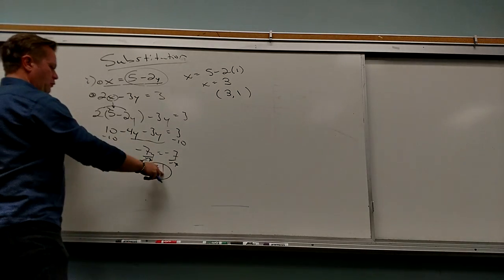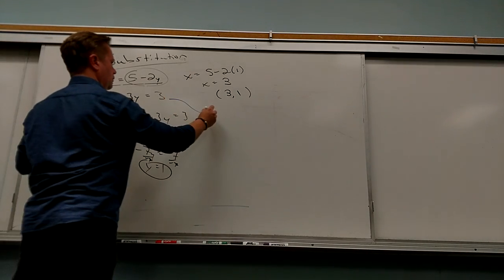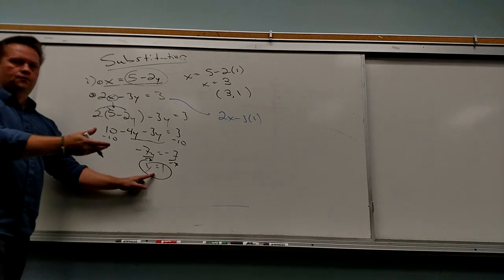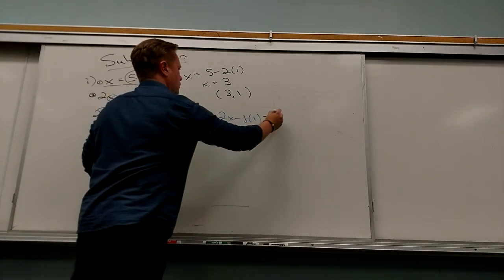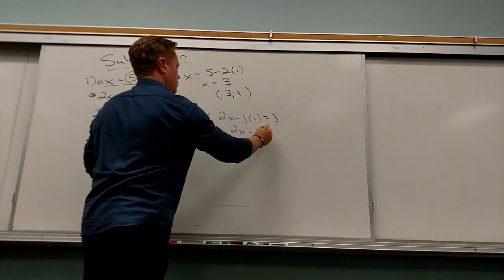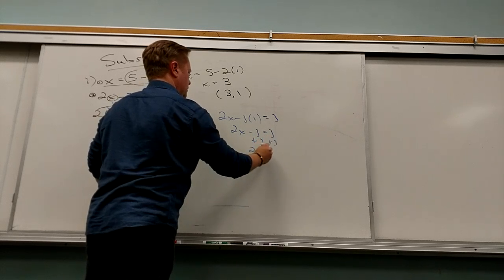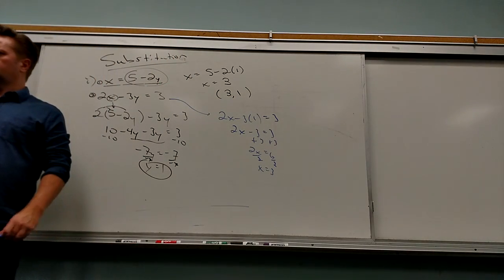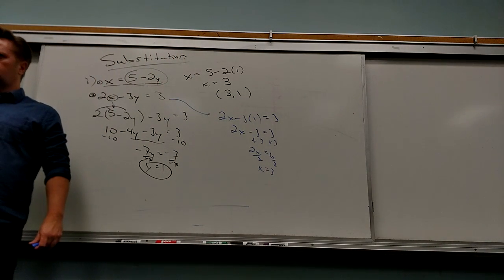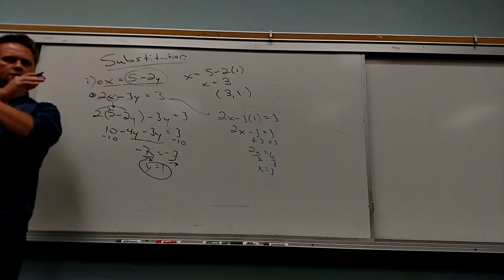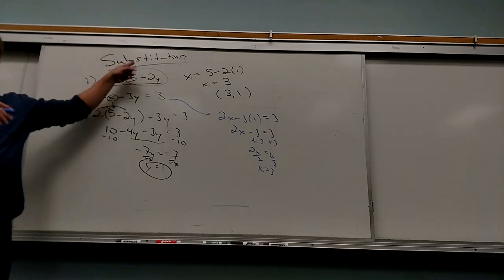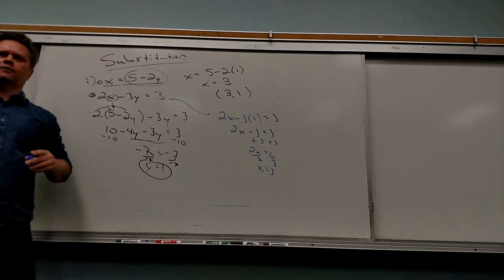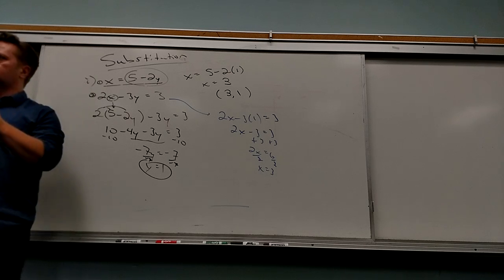Now watch — if I were to plug Y equals 1 in the second equation instead, I get 2x minus 3 equals 3. Add 3 — I get 2x equals 6. Divide by 2 — I get x equals 3. I still get x equals 3. The answer is where the two lines meet. So it doesn't matter where you put that Y value because both lines are going to agree. That's the whole point, and that's why it's a way to check.